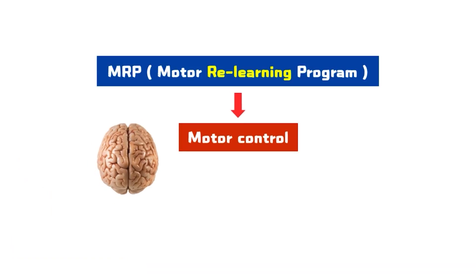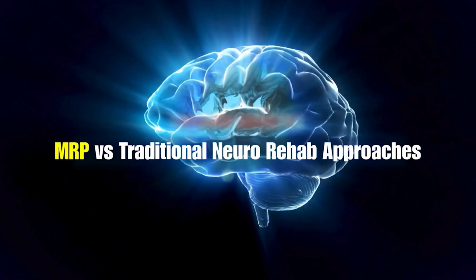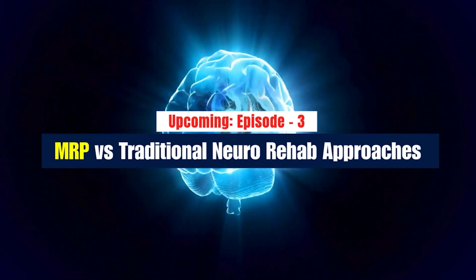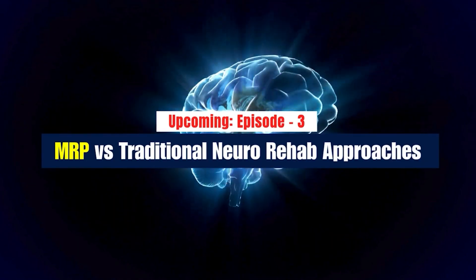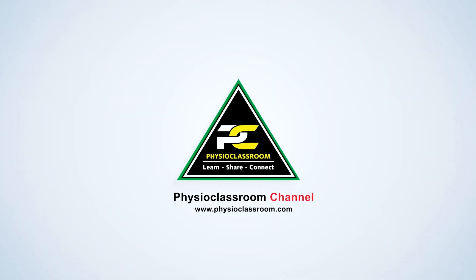So remember: neuroplasticity is the brain's ability to adapt and recover. Motor control is how movement is planned and executed. MRP leverages both, using targeted practice to help the brain relearn movement. Next up in the series: MRP vs. Traditional Neuro Rehab Approaches. Thanks for watching.